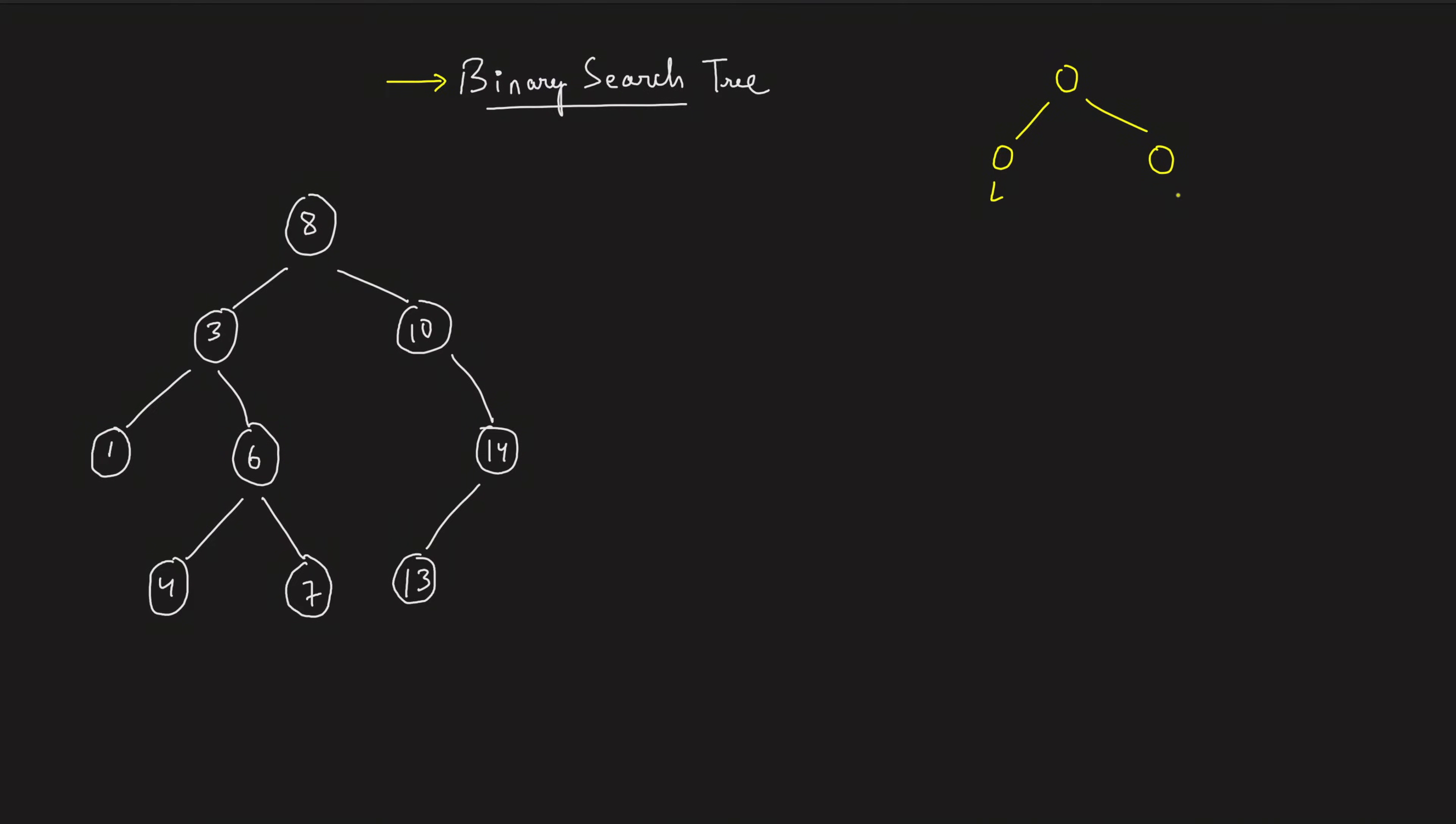This left guy should be lesser than the node. Very important. It should be lesser than the node and this right guy should be greater than the node. That's what a binary search tree signifies. Everything on the left, yes I repeat, everything on the left should be lesser than the node's value and everything on the right should be greater than the node's value. You cannot say it should be equal to, there is no presence of equal to in any case.